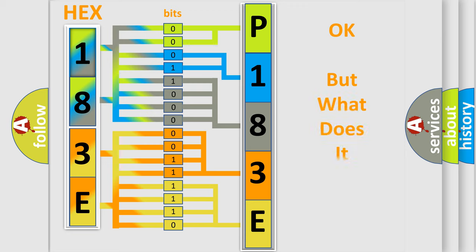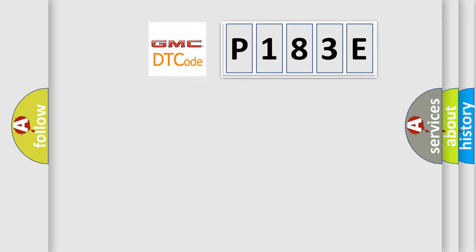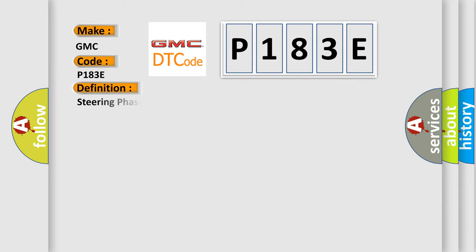We now know how the diagnostic tool translates received information into a more comprehensible format. The number itself does not make sense to us if we cannot assign information about what it actually expresses. So, what does the diagnostic trouble code P183E interpret specifically for GMC car manufacturers? The basic definition is: Steering Phasor Circuit Short to Ground.